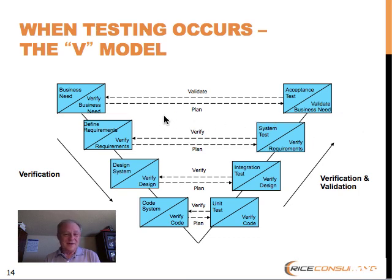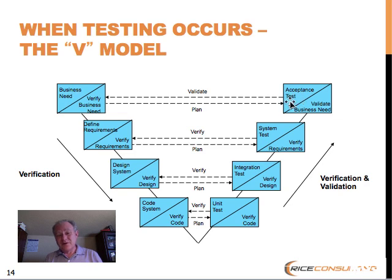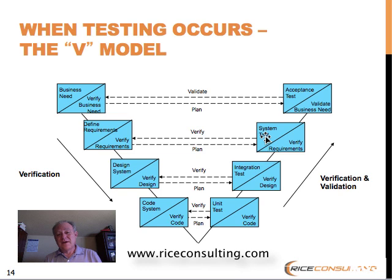One other thing we haven't talked about is there's another arrow going from the left to the right talking about planning. There are things that you create on the left-hand side of the V early on that can be used for early planning of the things on the right-hand side. For example, acceptance criteria — if you're going to start a project and you don't have acceptance criteria defined already, you're already in trouble. The acceptance criteria defined in the business need could very well be the same acceptance criteria you have in your acceptance planning. The base requirements developed could be the basis for your initial system test objectives. You see this kind of two-way interaction going on.